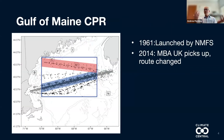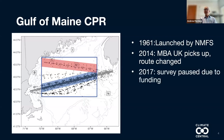In 2014, budget sequestration challenges caused the Continuous Plankton Recorder survey to fall out of the NMFS budget. The Marine Biological Association of the UK resumed funding the route — they could pay to have the route continue but couldn't fund sample processing, so samples were just being stored in a warehouse in the UK. At that time the route also shifted from the southern domain to the northern domain because the ship shifted its home port from Boston to Portland, Maine. In 2017, the Marine Biological Association decided they could no longer support the route and paused it at the end of 2017.